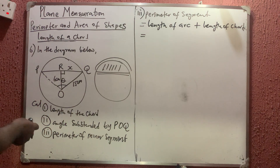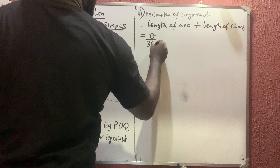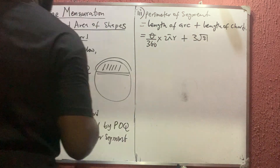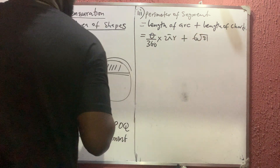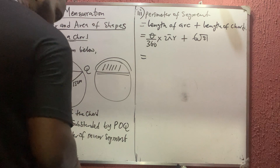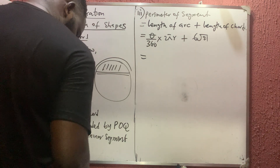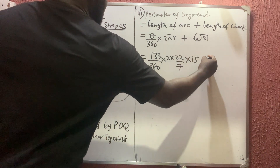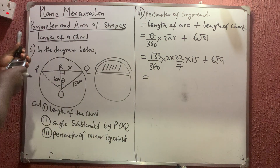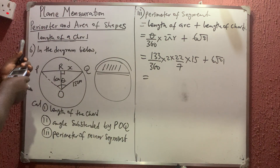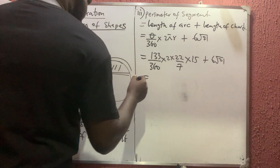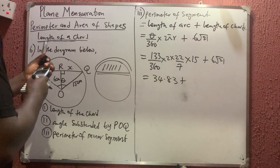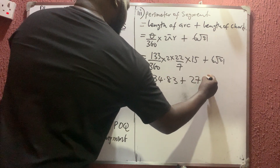The length of the arc = (θ/360) × 2πr = (133/360) × 2 × (22/7) × 15. The chord length is 6√21. So: 133/360 × 2 × 22/7 × 15 + 6√21 = (133 × 44 × 15) / 2520, which gives approximately 34.83 cm. And 6√21 ≈ 27.50 cm.